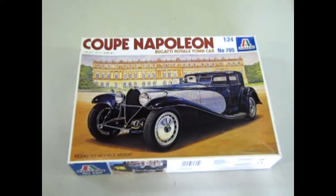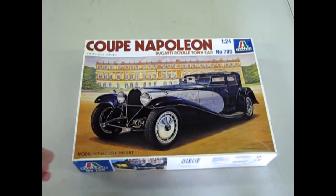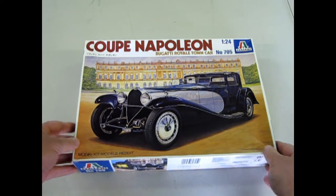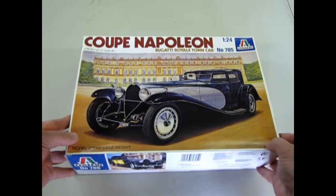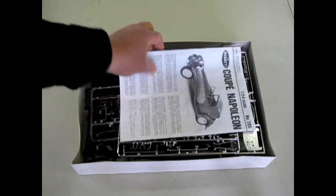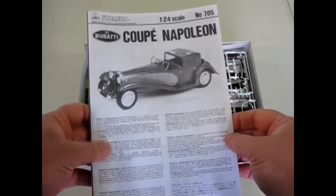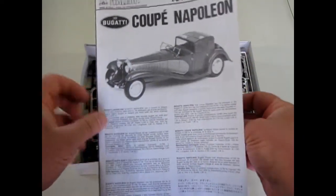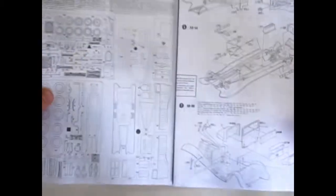And here is the Coupe Napoleon. Nice luxury car from Italieri in 1:24 scale. And we'll just open the box on this beautiful piece of artwork. And there are... Here's the instructions. As you can see, there are a lot of parts to this kit.